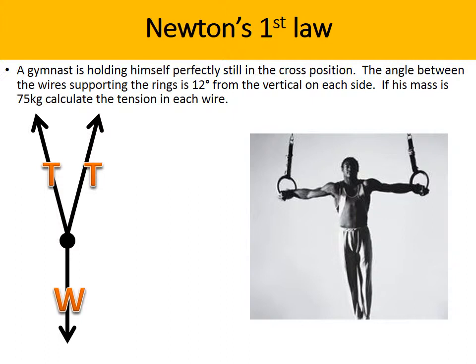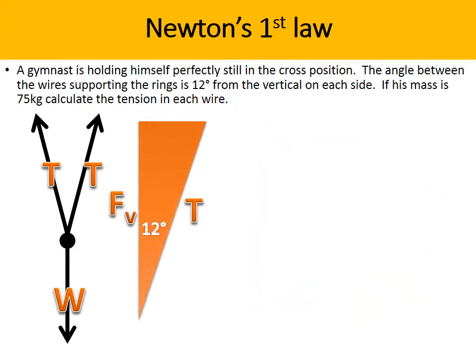So we know that his weight must be equal to an upwards force of tension, so the vertical component of tension there. So FV, the force up the way, must be equal to W. Now, because there's two ropes, that force will be evenly distributed, because the angle's equal between the two wires there. And we're trying to figure out tension. So we know FV is equal to half of the weight.